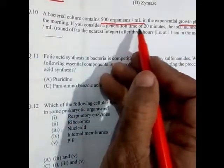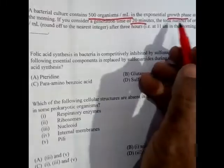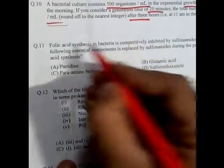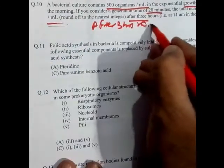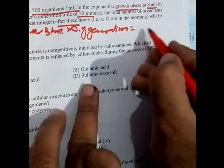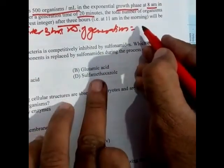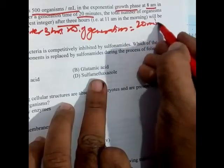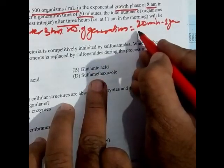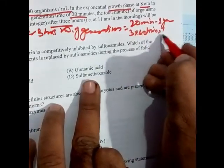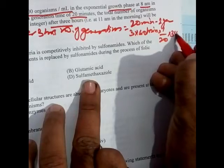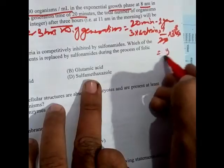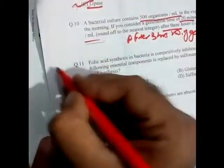Question 10: A bacterial culture contains 500 organisms per mL in exponential growth phase at 8 a.m. The generation time is 20 minutes. Over 3 hours, that is 180 minutes, the number of generations is 180 divided by 20, which equals 9 generations.